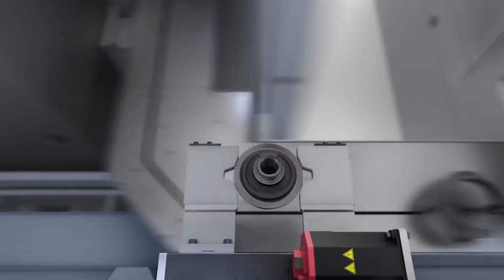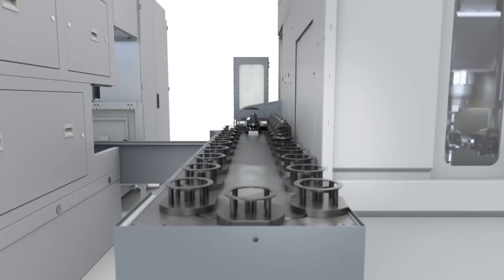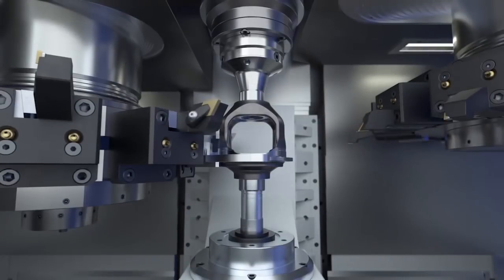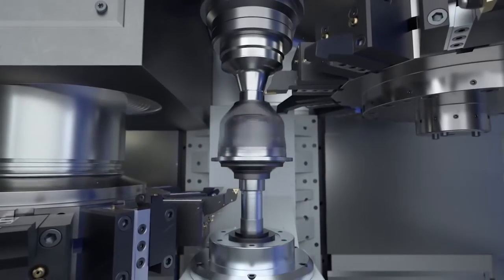The remaining external machining of the differential housing is performed with a single clamping operation on a VT4 turning machine. This eliminates the occurrence of positioning errors when changing the clamping position.